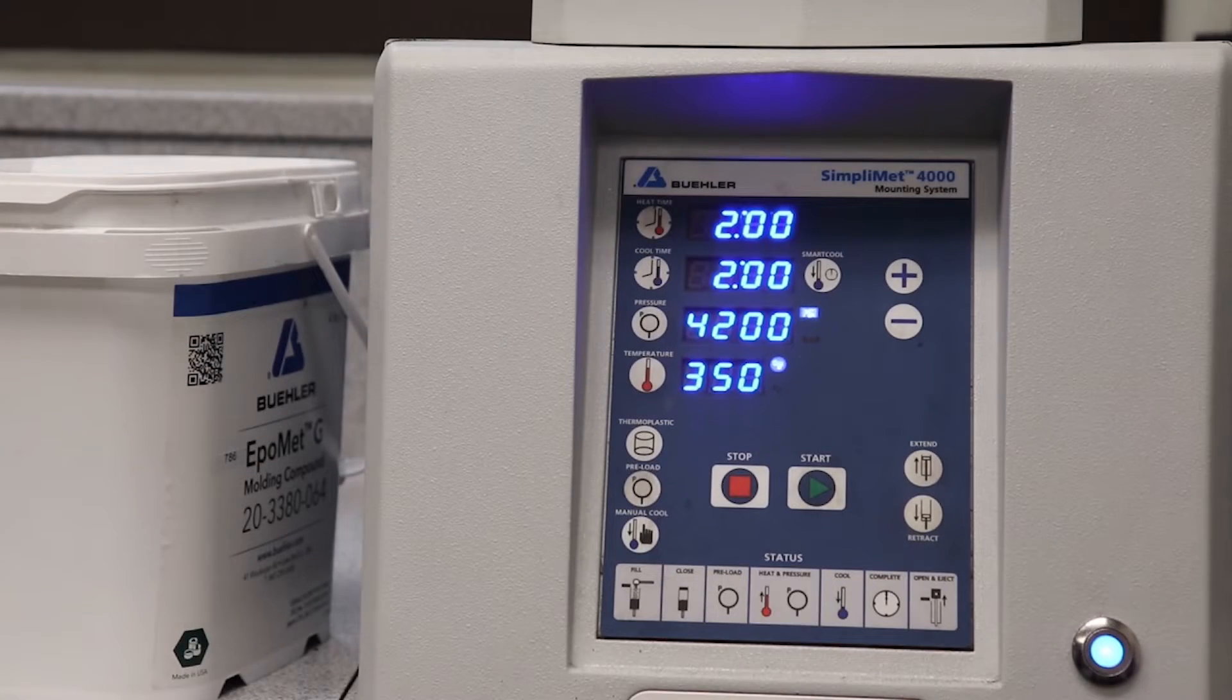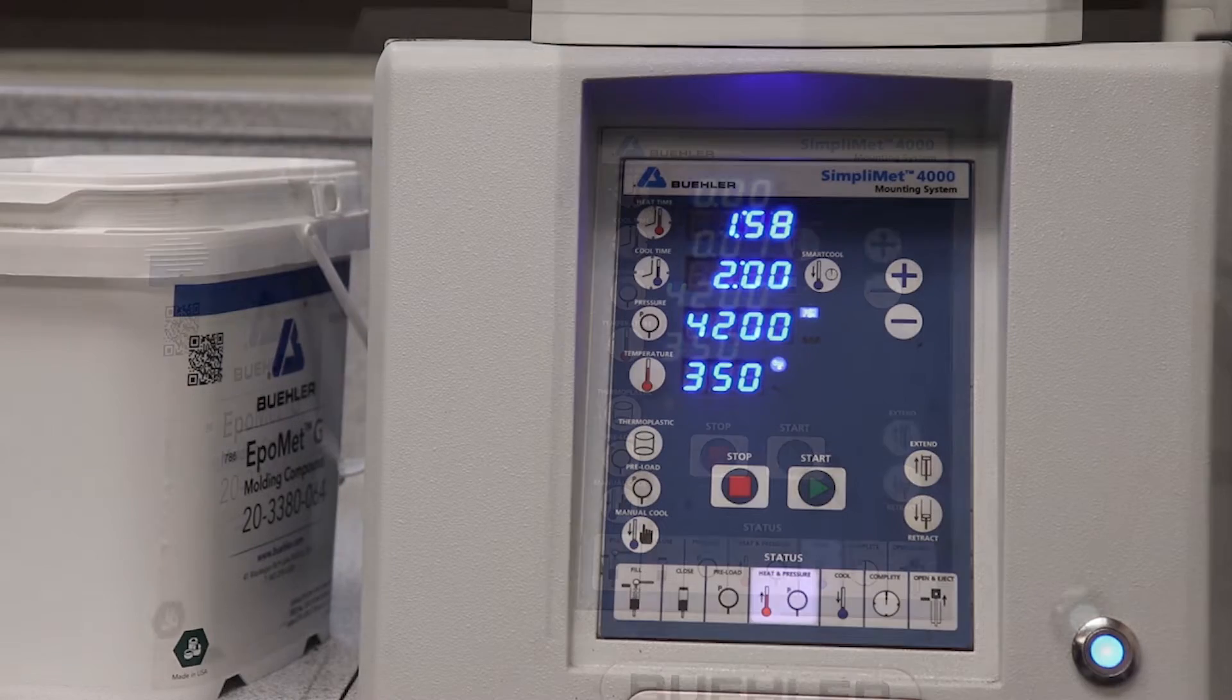The SimpliMet 4000 will indicate the step it is on using the status bar towards the bottom of the control panel.